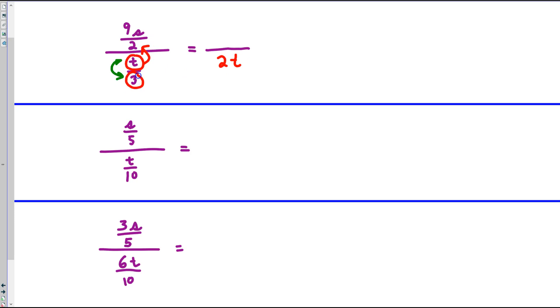The 3 becomes part of the numerator, and it joins the 9s. That gives 27 over 2 times s over t.